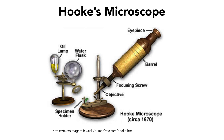Here is the figure of Robert Hooke's microscope, where you can see the specimen holder, the objective, the focusing screw, the barrel eyepiece, the water flask acting as the condenser, and the oil lamp acting as the source of light.